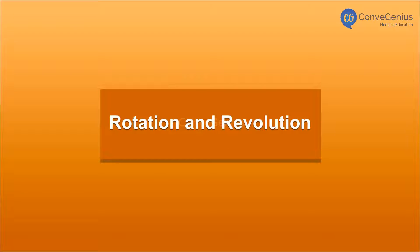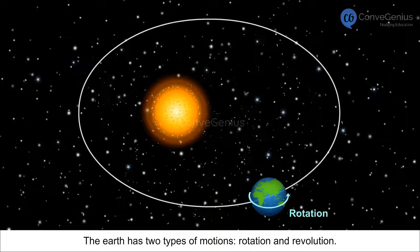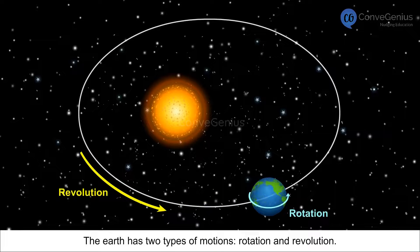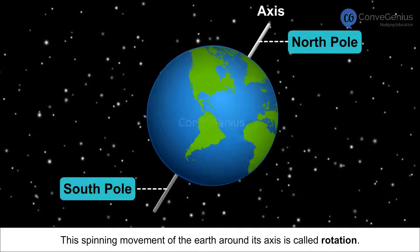Rotation and Revolution. The Earth has two types of motions, rotation and revolution. This spinning movement of the Earth around its axis is called rotation.